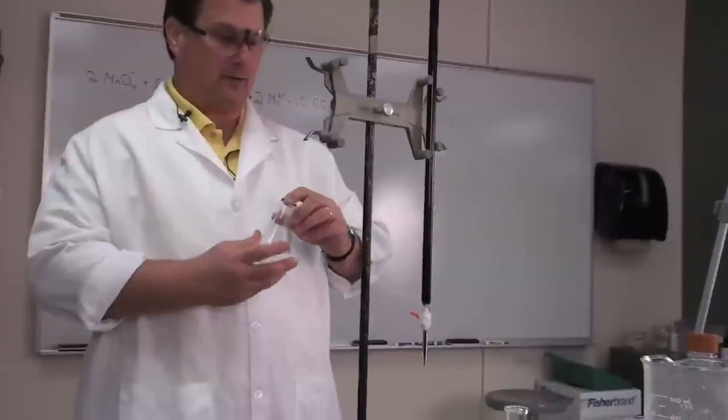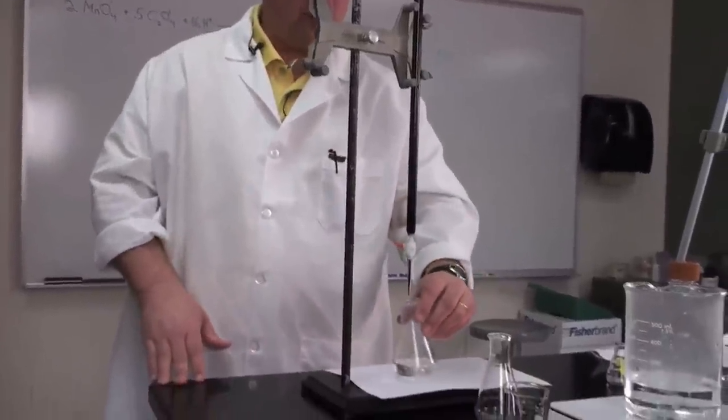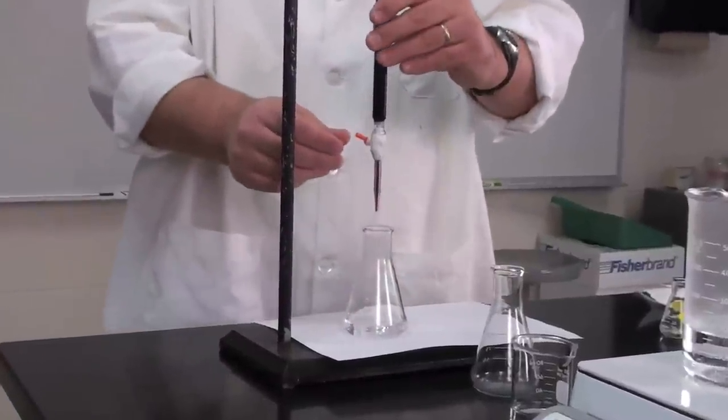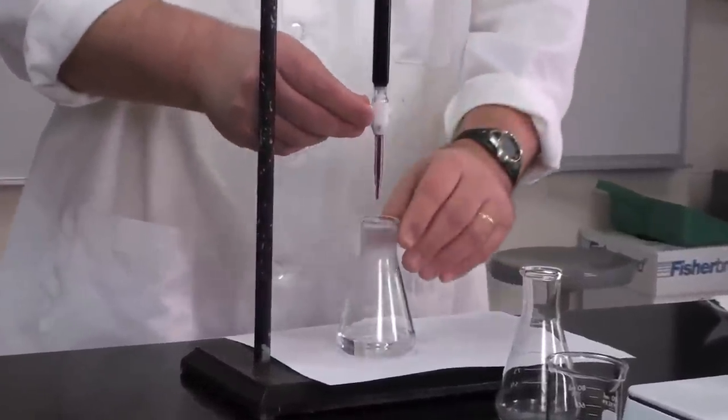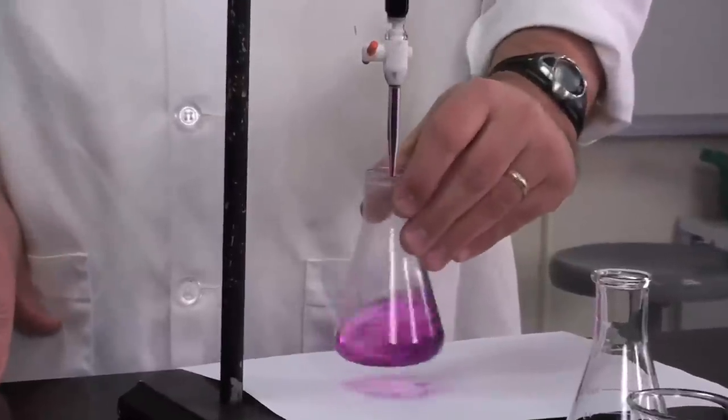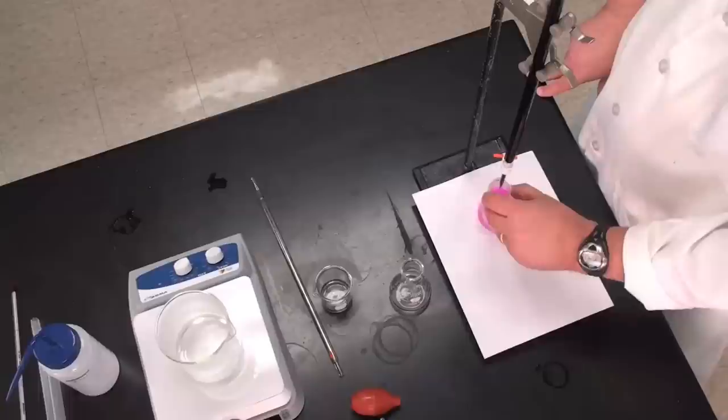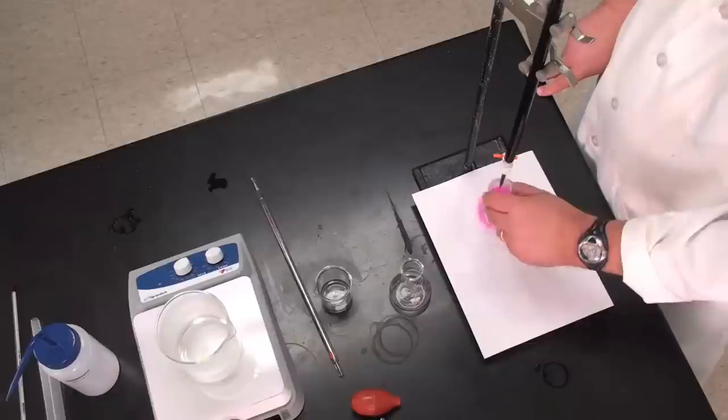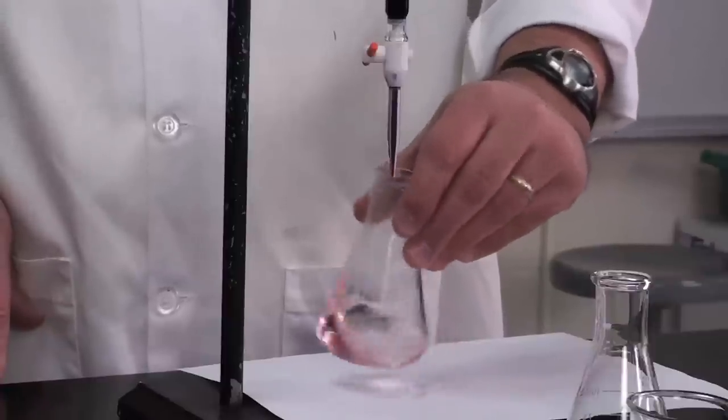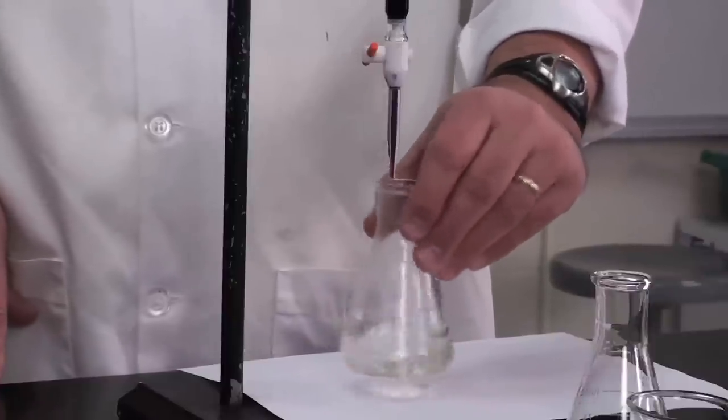Now let's begin our titration. We've got the initial volume, we've got our oxalate solution heated, so we can start. I'm going to add a little bit at first, swirl it. Notice the pink persists for just a little bit, but it's going to go away. The color that is. And there it goes.